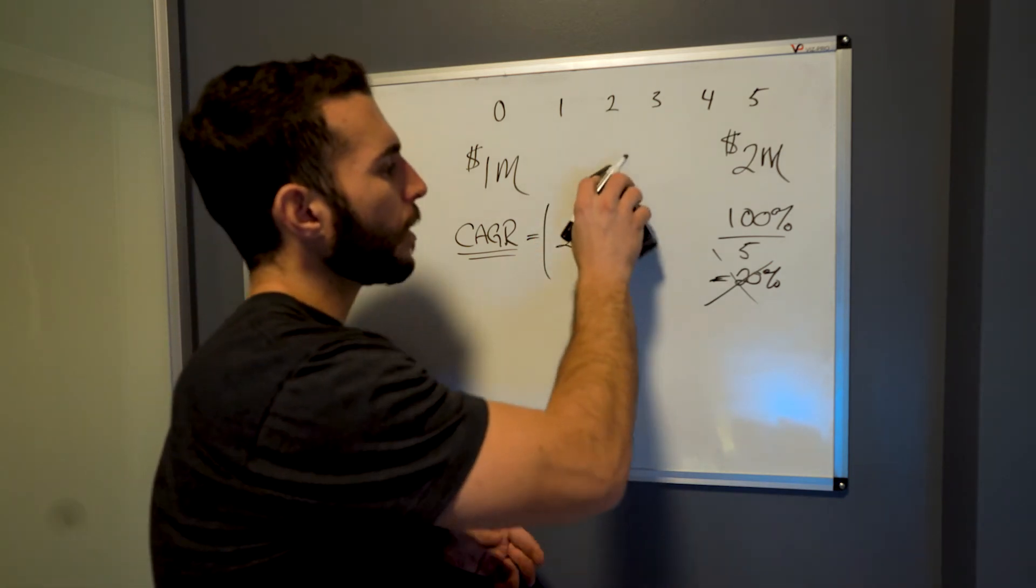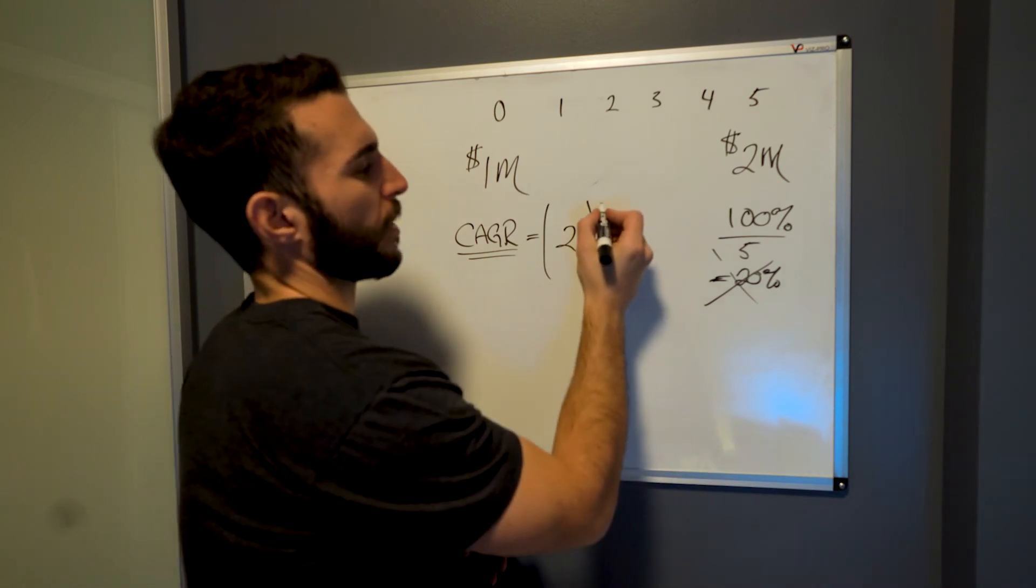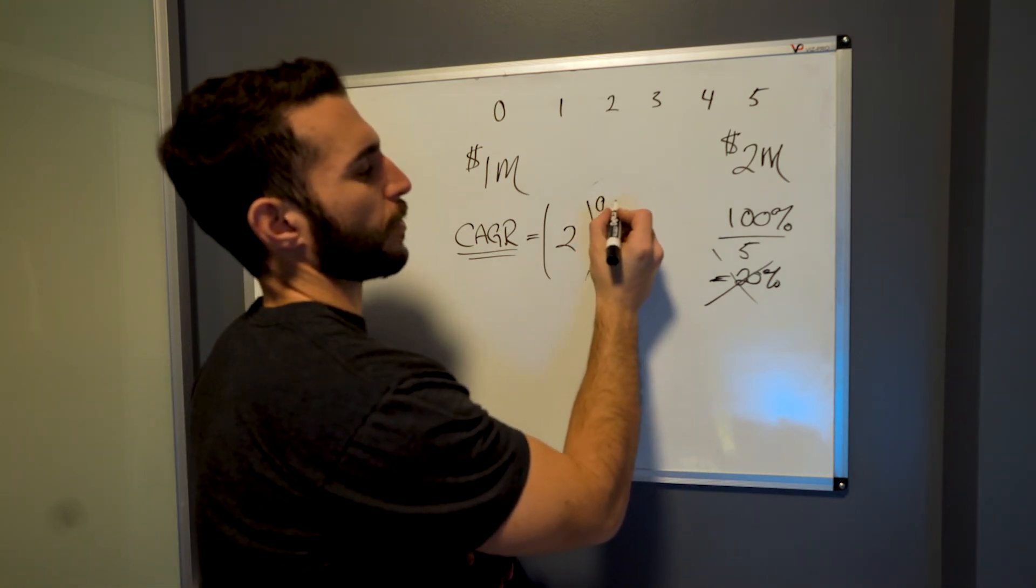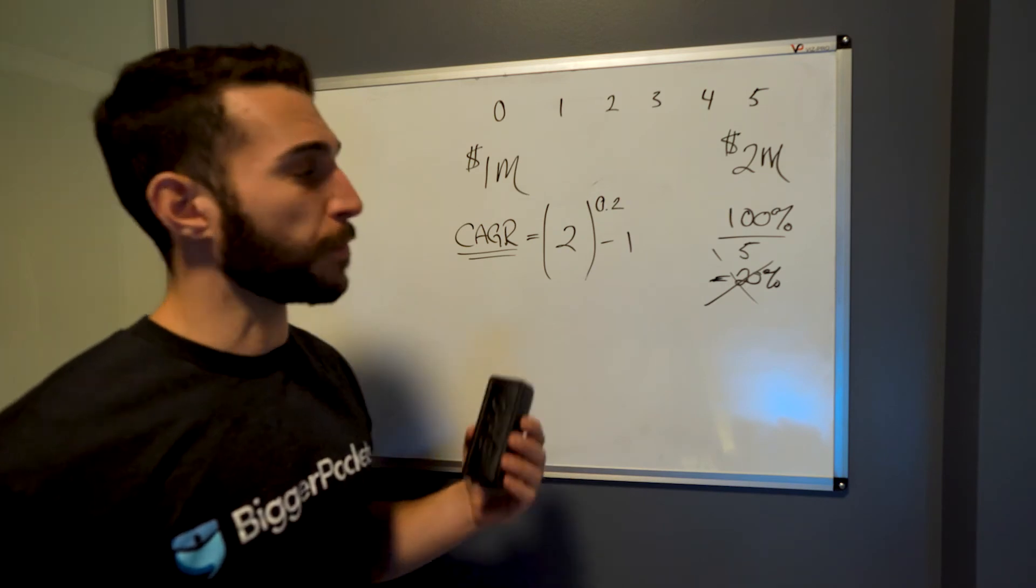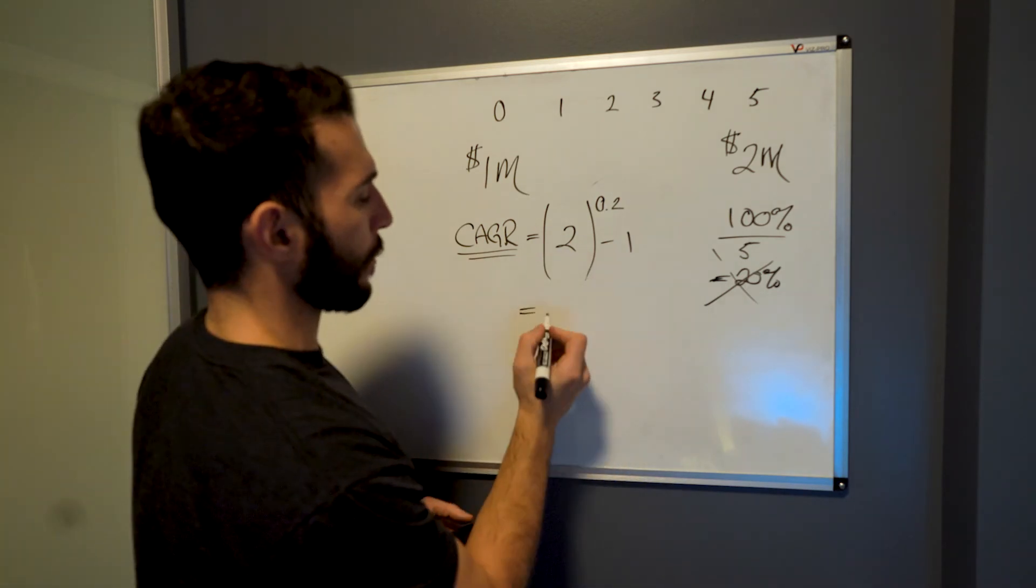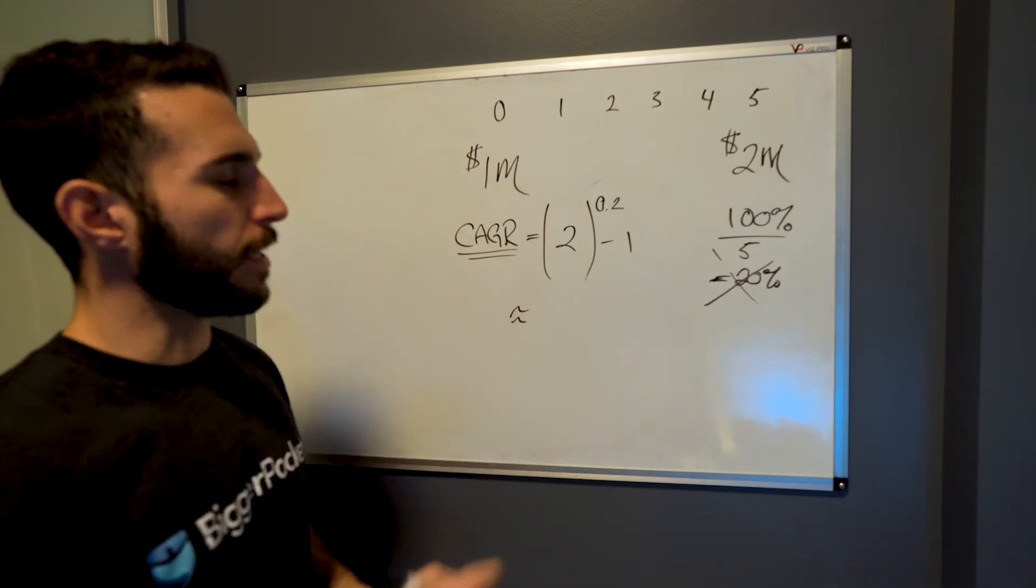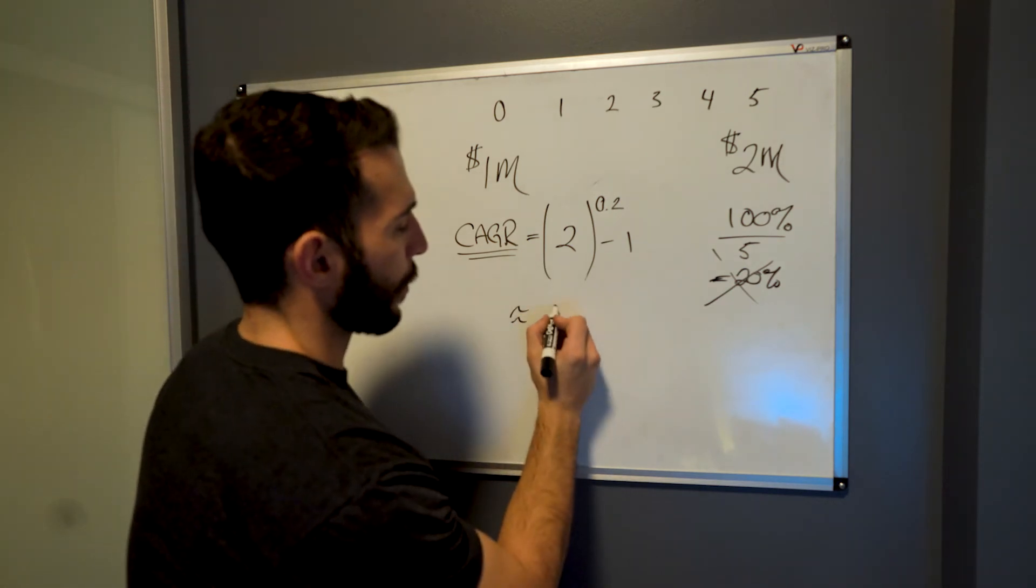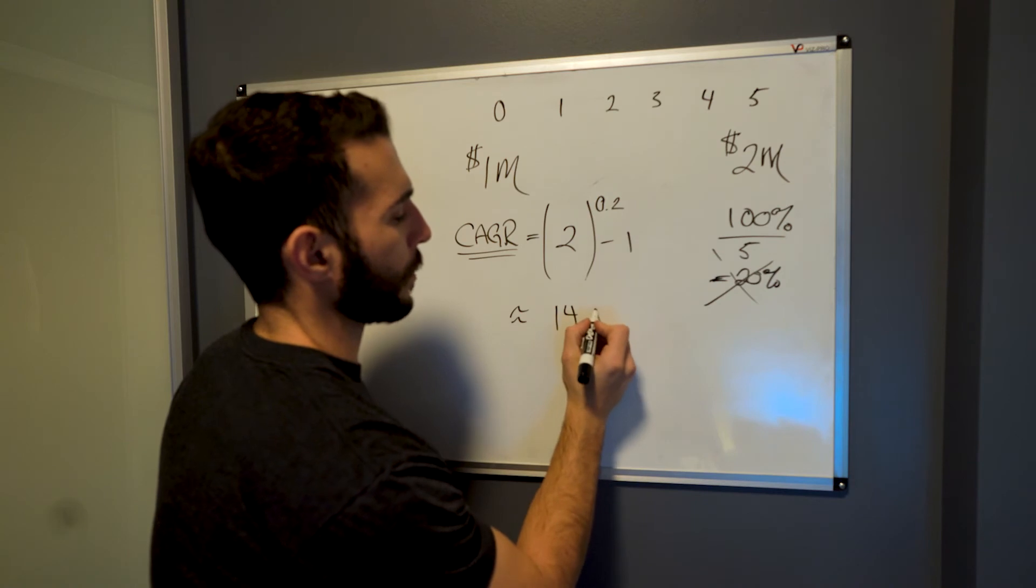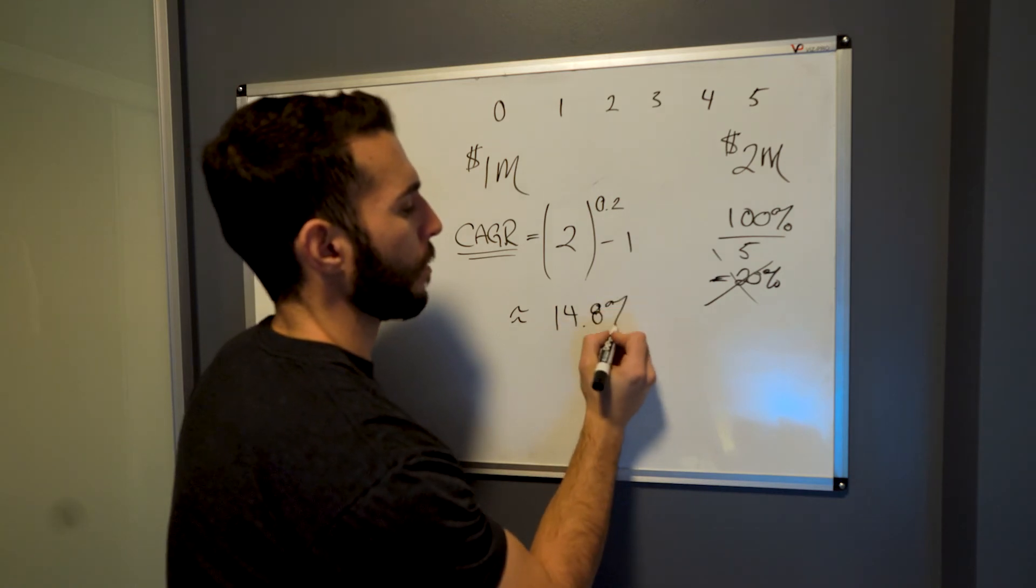Now, 1 over 5, kind of confusing doing a calculator. Let's turn that to a decimal. 1 over 5 is 0.2. And then we can do the calculation. What you're going to find here, actually approximately, what you're going to find here is that when you do this calculation, you're going to get a return of 14.8%.